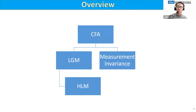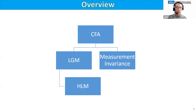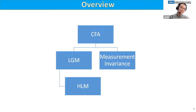Now that we've gotten the logistics out of the way, let's talk about the content — intermediate topics in CFA. The two intermediate topics are latent growth modeling and measurement invariance. These are both extensions of CFA and are classes of confirmatory factor analysis models. LGM extends CFA to longitudinal models, while measurement invariance extends CFA to multi-group models. HLM isn't technically a CFA model, but there are ways to make LGM and HLM equivalent.